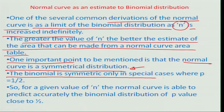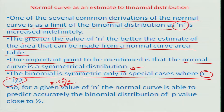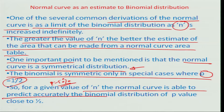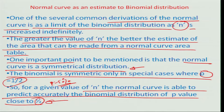The binomial distribution becomes symmetric only in the special case where the probability is exactly 50 percent — that is, fraction defective or fraction good. For a given value of n, the normal curve can accurately predict the binomial distribution when p is close to one half, though that does not mean it cannot approximate other cases.